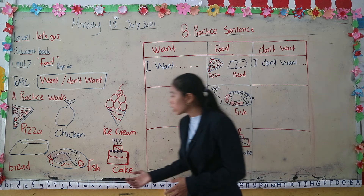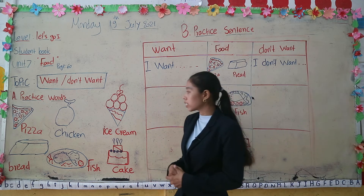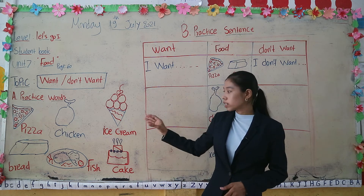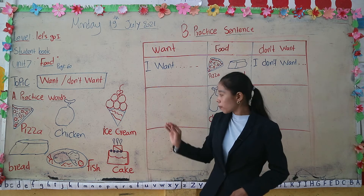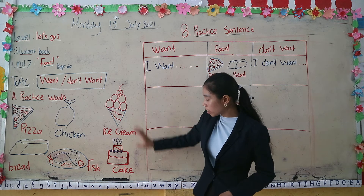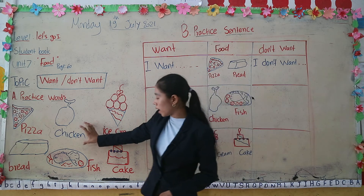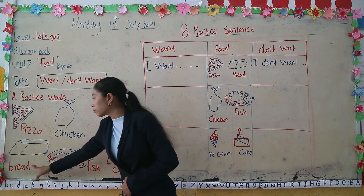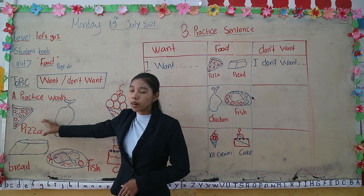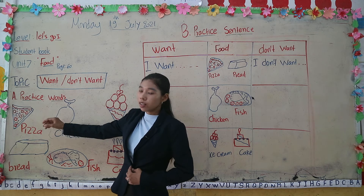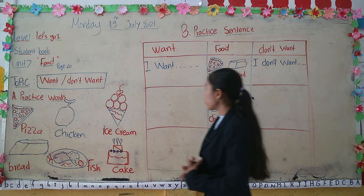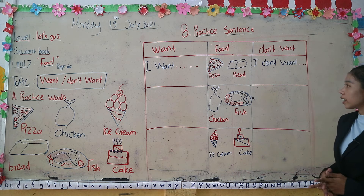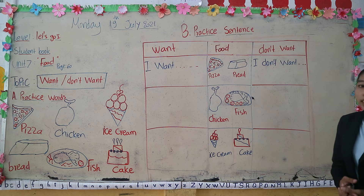So we know about the words and the pictures. All these words are for food — things to eat. Ice cream and cake are sweet. Chicken and fish are also food. And pizza and bread are things you can have for breakfast or lunch that you want.